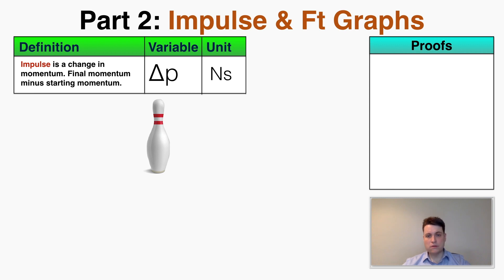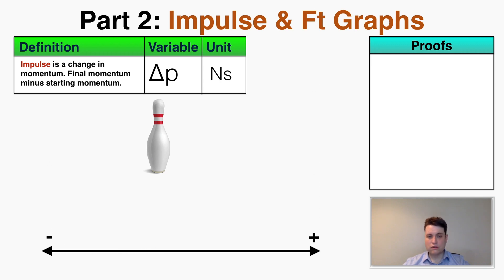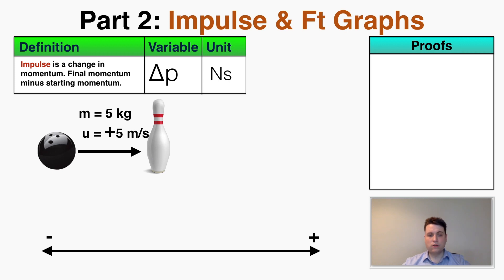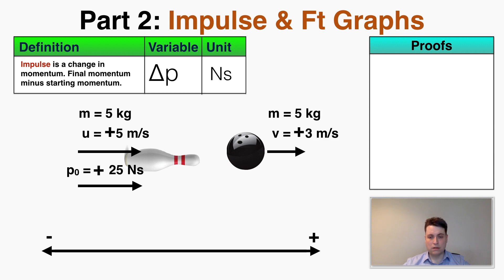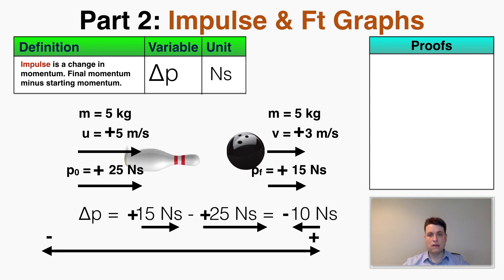Usually a change in a variable is measured in the same unit as the variable itself. I'm going to imagine that positive is to the right and negative is to the left, and I have a bowling ball hitting a pin. If the ball has a mass of 5 kilograms and an initial velocity of 5 meters per second, the starting momentum p₀ is positive 25 Newton seconds. When it hits the pin and leaves at only 3 meters per second, the final momentum is 15 Newton seconds. So the impulse — the change in momentum — is negative 10 Newton seconds.